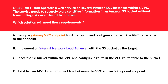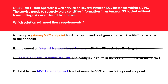Option B says implement an internal network load balancer. An internal network load balancer cannot target an S3 bucket, so that's incorrect. Option C says place the S3 bucket within the VPC — S3 buckets cannot be deployed inside a VPC, so this is an incorrect statement. Option D says establish AWS Direct Connect, which is used for dedicated network connections, not for securing S3 access within the VPC. So we'll lock option A as the right answer.